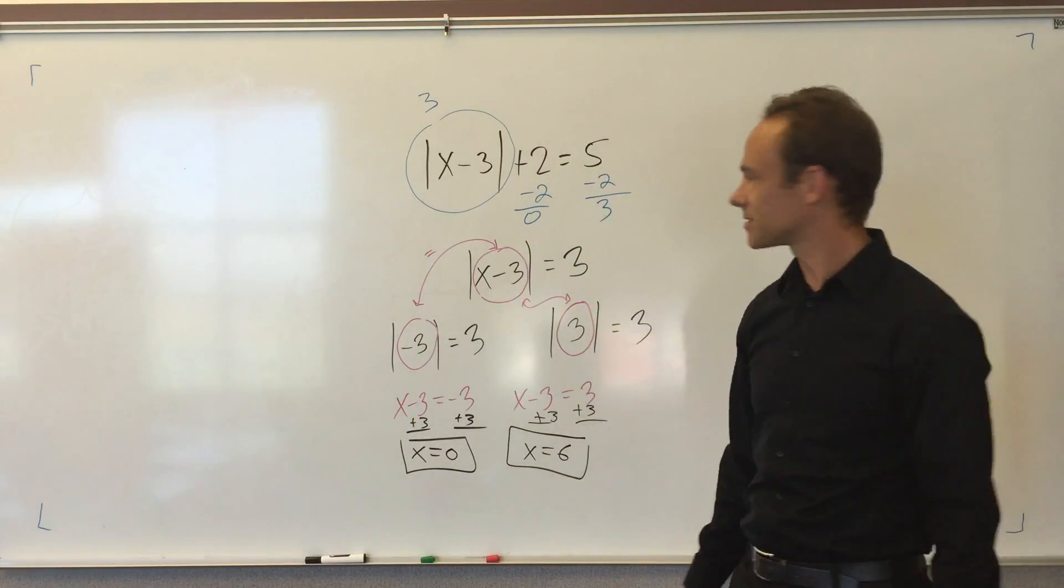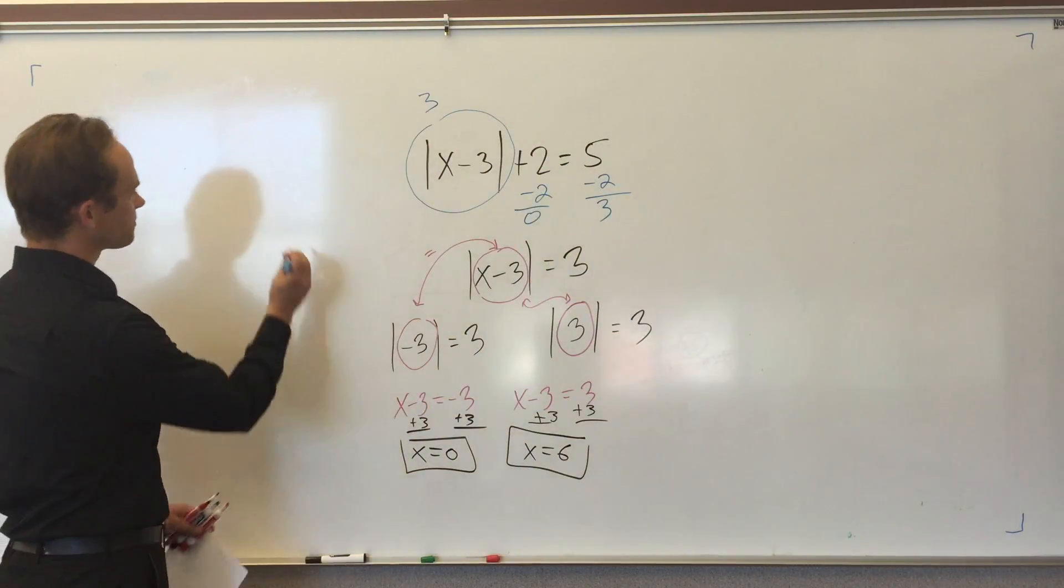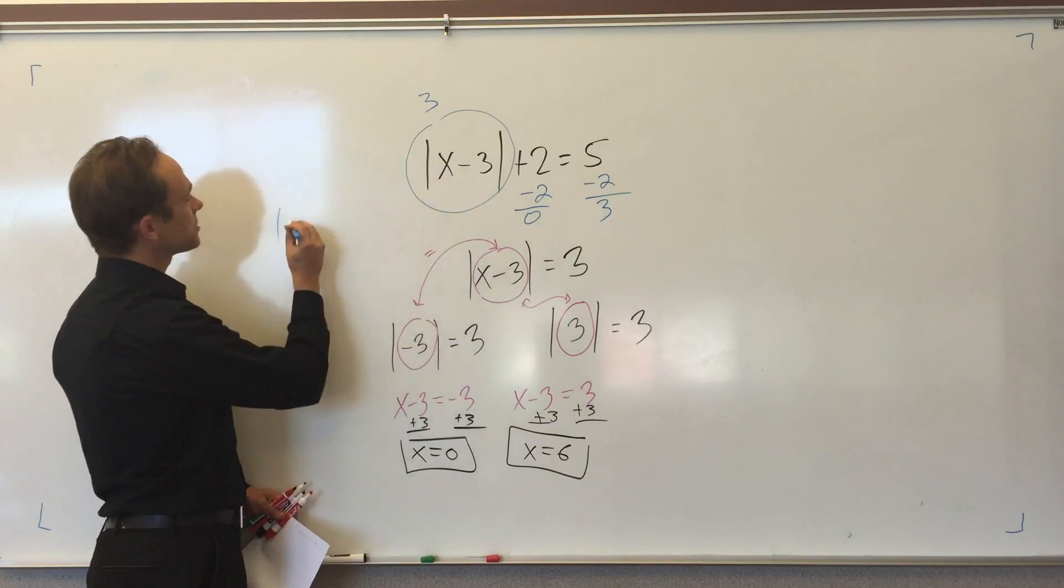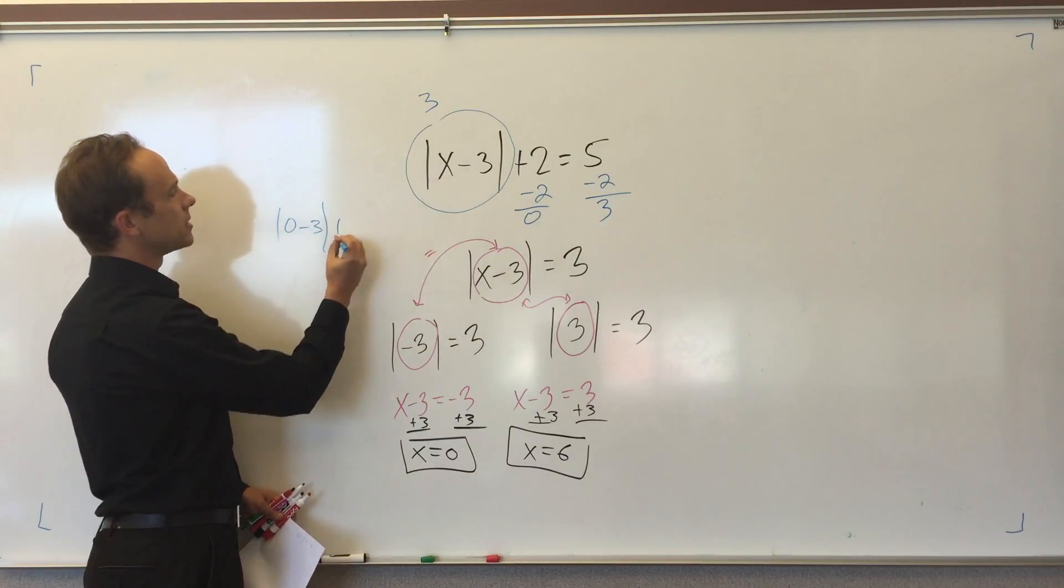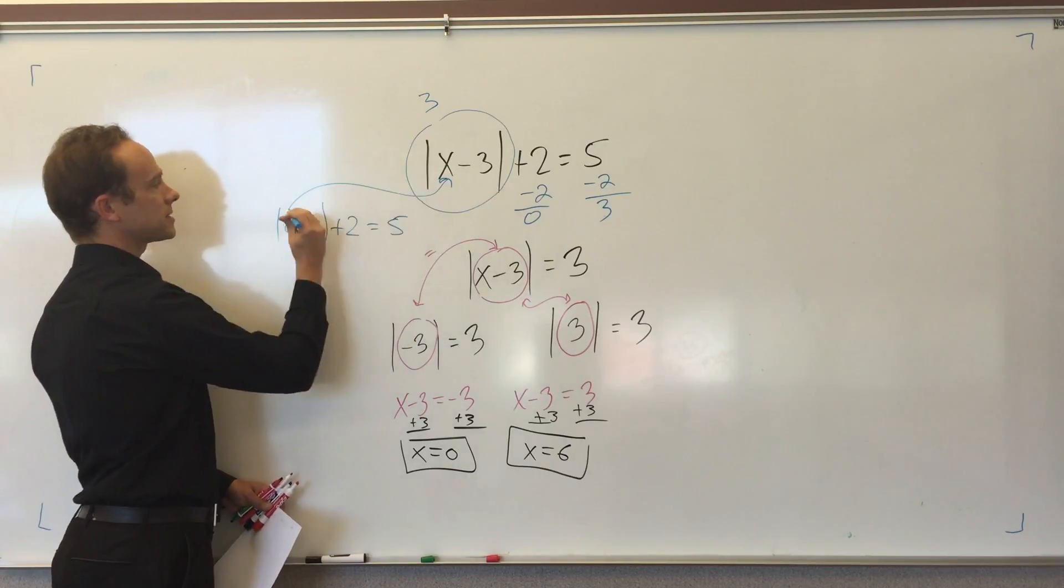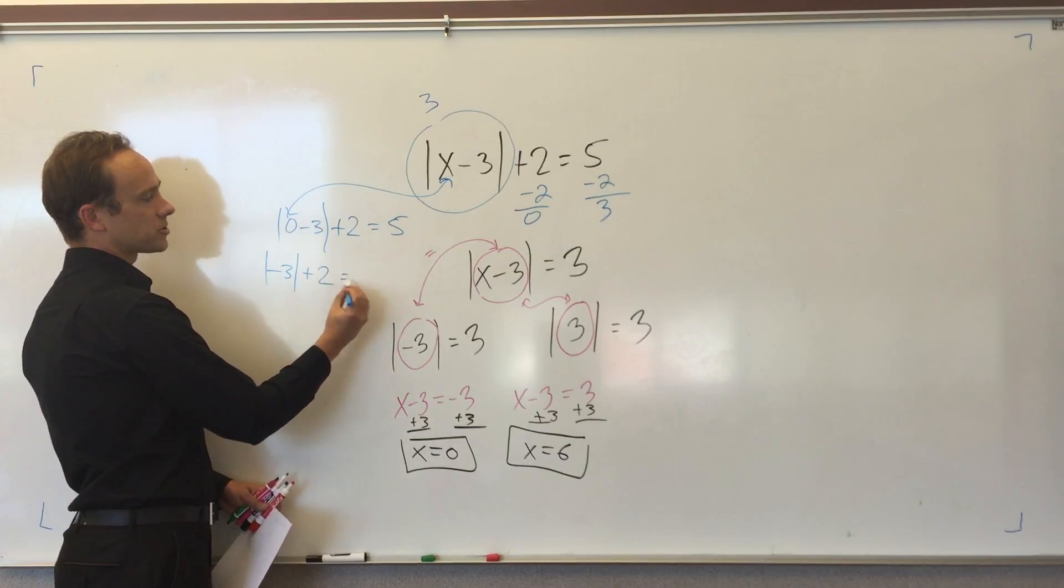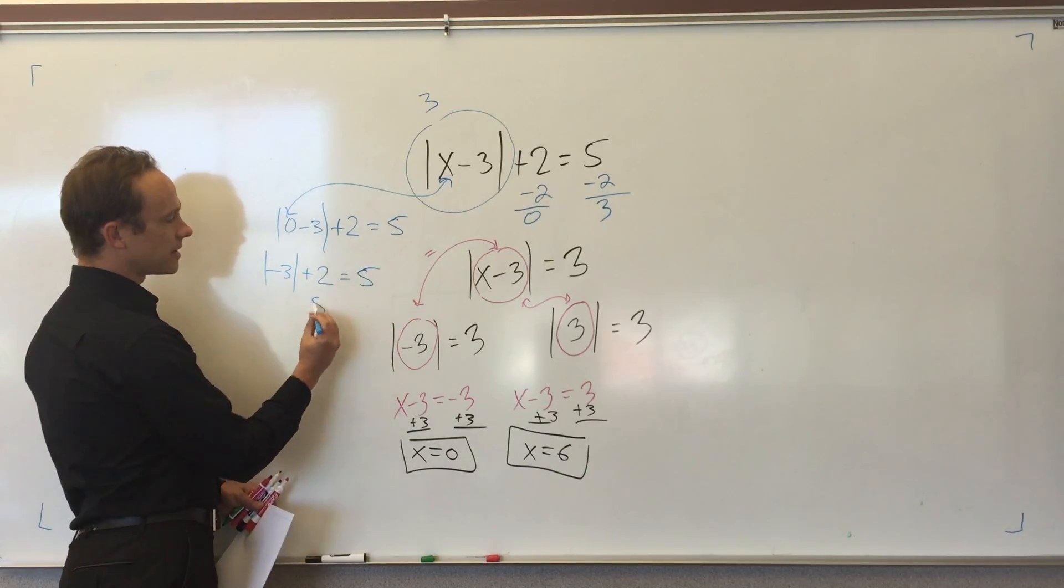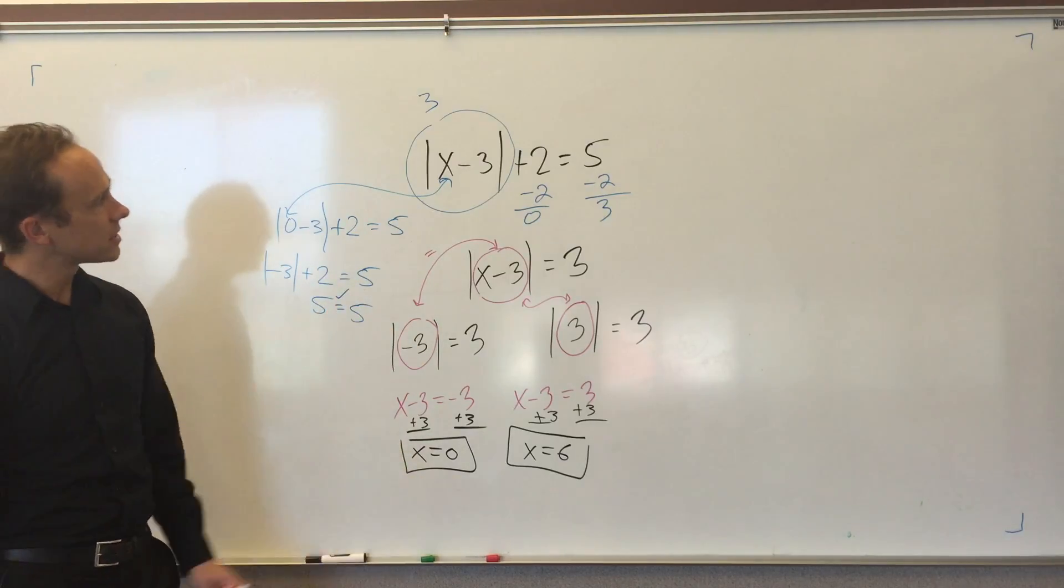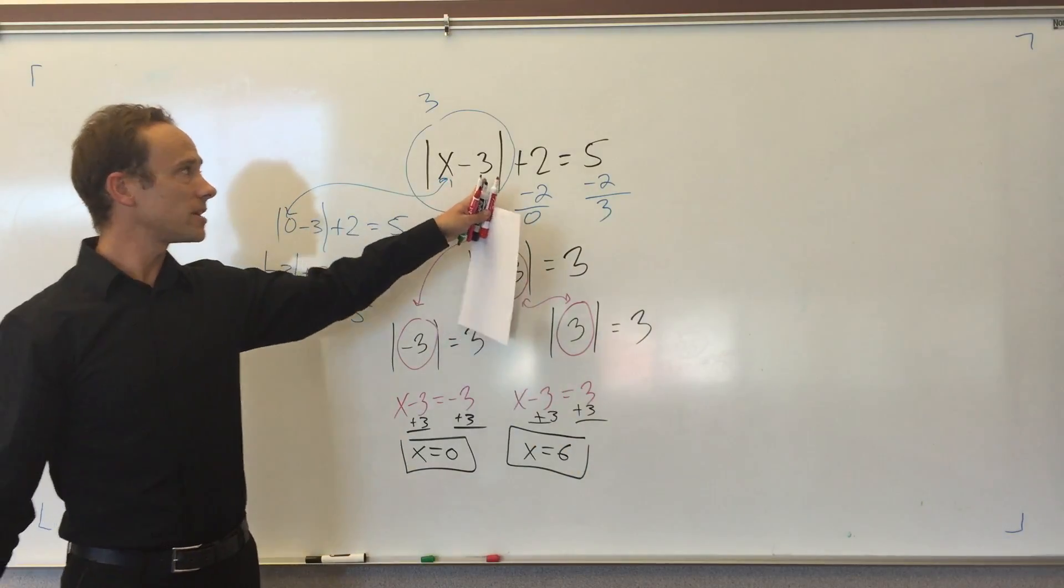You should check your answers before you wreck your answers. Let's get it. I'm just going to plug in 0 and see if it's true. Absolute value of 0 minus 3 plus 2, I wonder if that's 5. The absolute value of negative 3 plus 2 is equal to 5. That gives me 5 is equal to 5 because 3 plus 2 is 5, so that answer works.